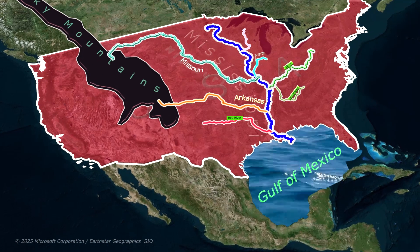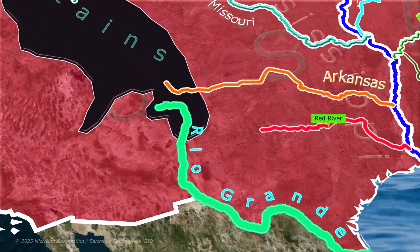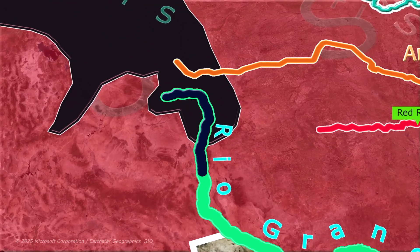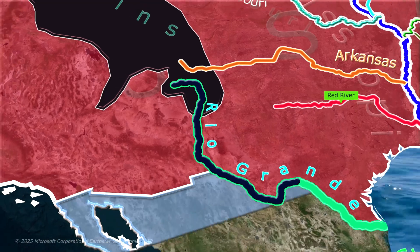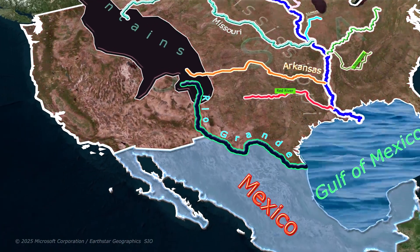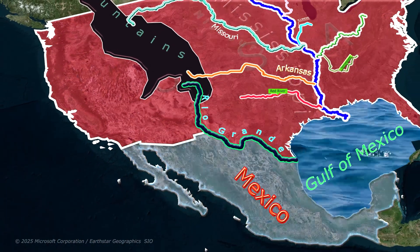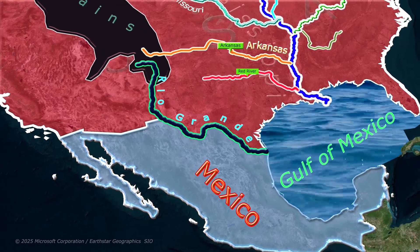Now let us study the Rio Grande, which originates in the Rocky Mountains, flows southward to form a natural boundary between the United States and Mexico, and finally empties into the Gulf of Mexico.